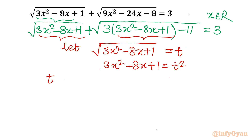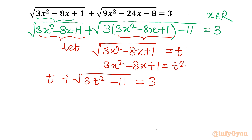After substitution, let me frame the equation. We get: t plus square root of (3t² - 11) equals 3. Now the equation is simpler. I will move t to the right side, so take t from both sides: square root of (3t² - 11) equals 3 minus t.